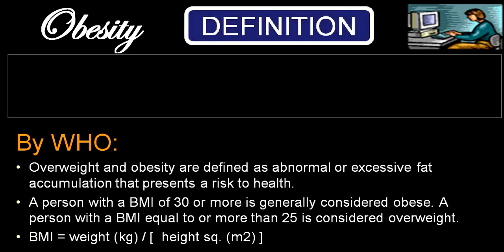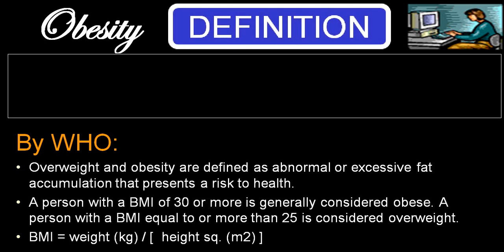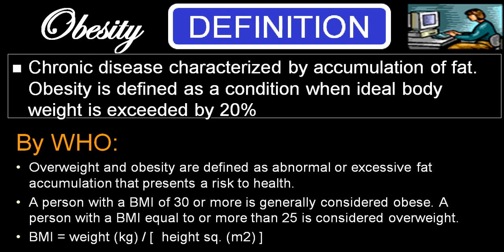Overweight and obesity are defined as an abnormal or excessive fat accumulation that presents a risk to health. If a person's BMI is 30 or more, they are considered obese; if BMI is 25 or more, they are considered overweight. BMI is calculated as weight in kilograms divided by height in square meters. This criterion is reduced for Indian purposes.